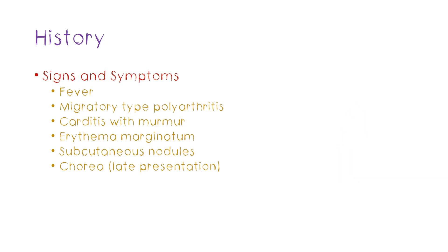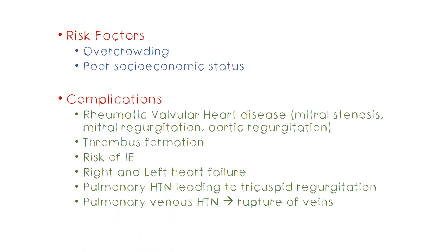Your history won't be complete without asking about risk factors and complications of the disease. The main risk factors identified are poor socioeconomic status and overcrowding. This is the reason why rheumatic fever is now mainly seen in developing countries with poor living conditions. The complications are many — as I said before, rheumatic carditis gives rise to murmurs, especially mitral stenosis, and infrequently mitral regurgitation and aortic regurgitation.